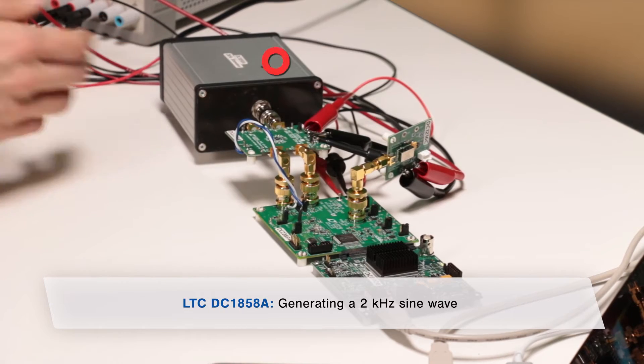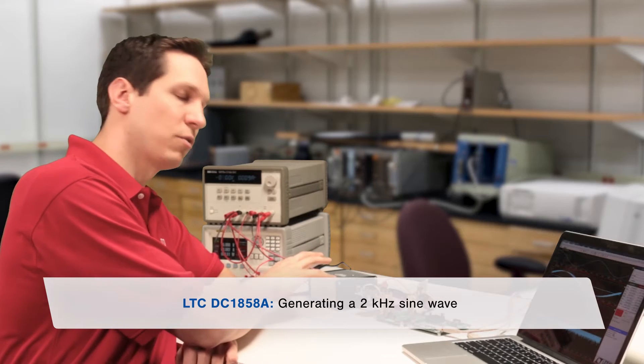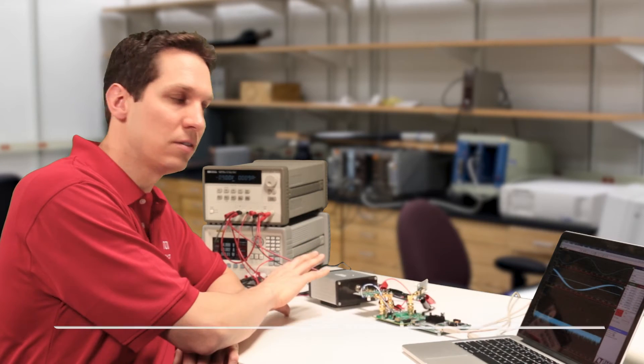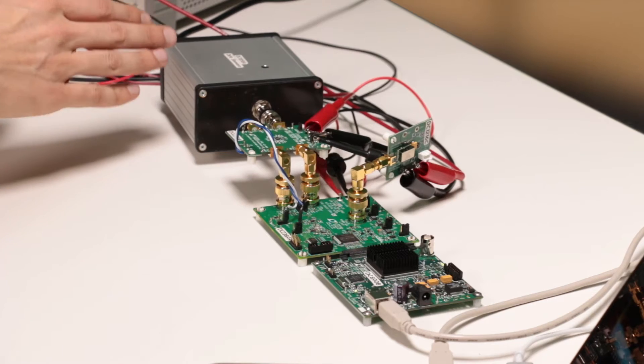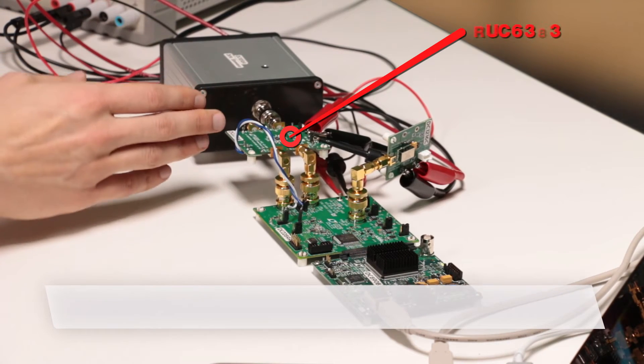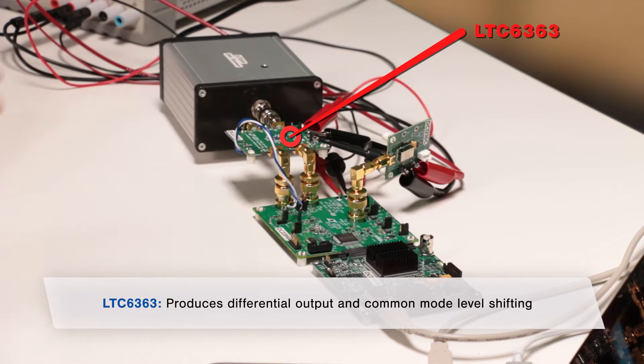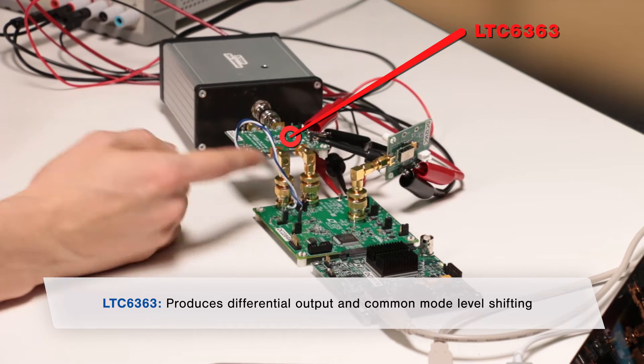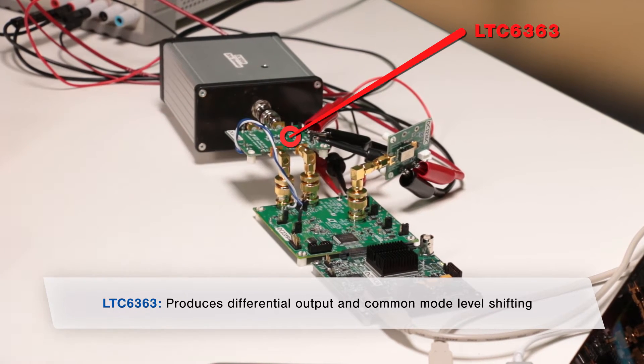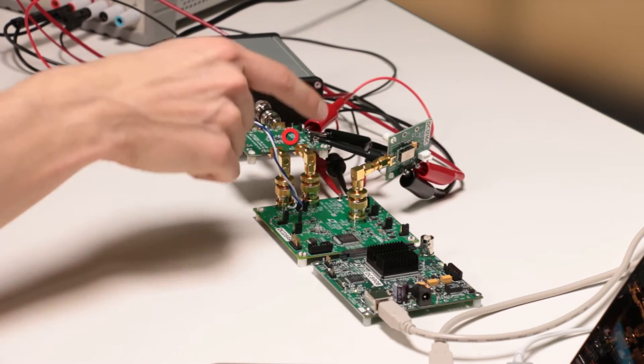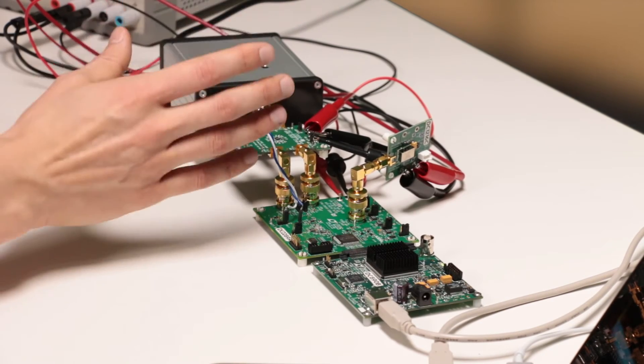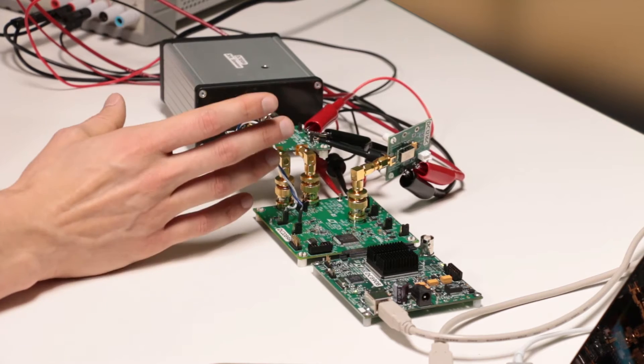We're using the DC1858 to produce a 2 kilohertz sine wave here, and this provides a really clean signal so that we get exactly what we want. The source goes from here to a fully differential amplifier that splits it and also provides a common mode voltage that goes in here to the V-Ref over 2. So this is how we get a nice clean, easy to see source.